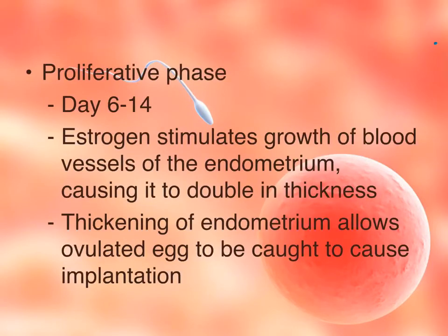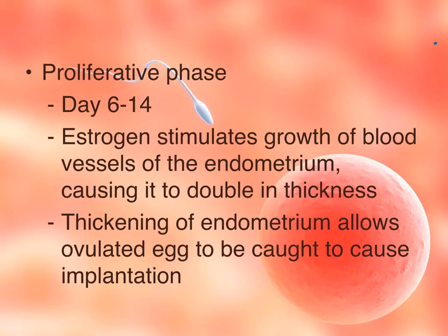Day 6 through day 14 is called the proliferative phase because the endometrium is getting thick again. As the follicle is developing, it releases estrogen, and this estrogen stimulates the growth of blood vessels in the endometrium, causing it to thicken. The thickening of the endometrium is important because when the ovulated egg is fertilized, it must be implanted in the wall for pregnancy to occur. If the egg does not implant, then there is no pregnancy.